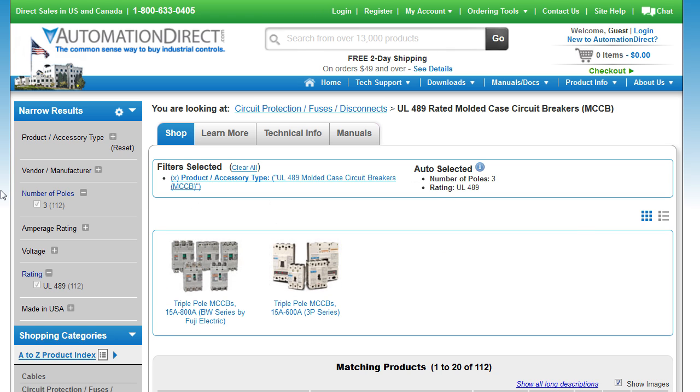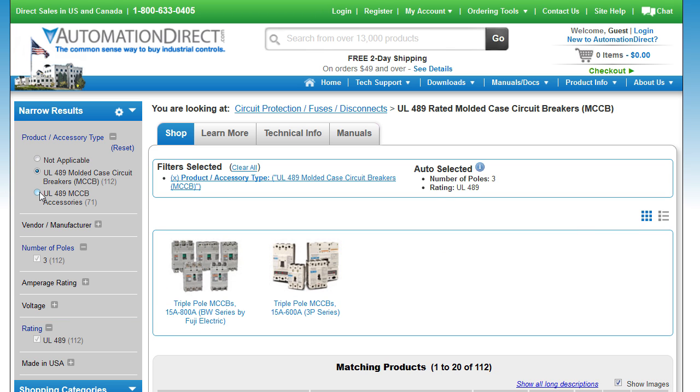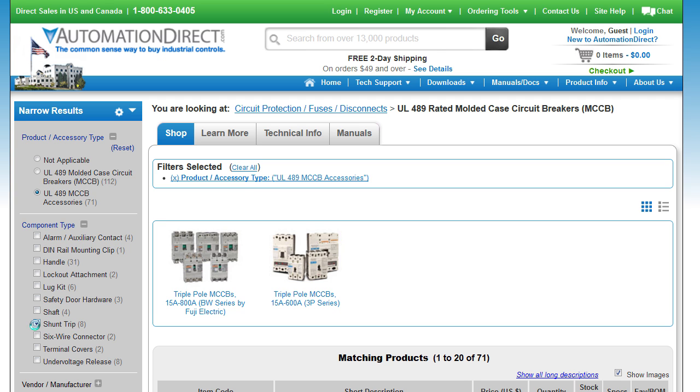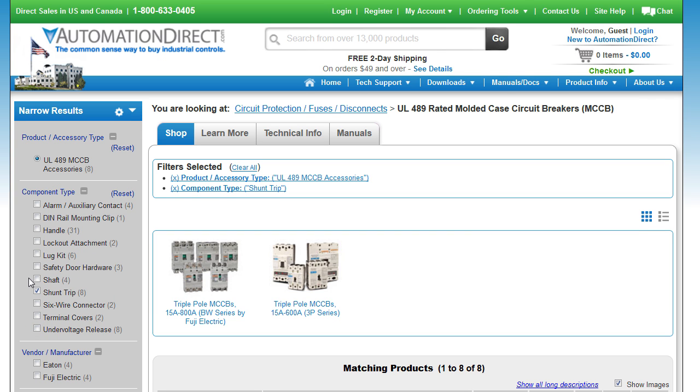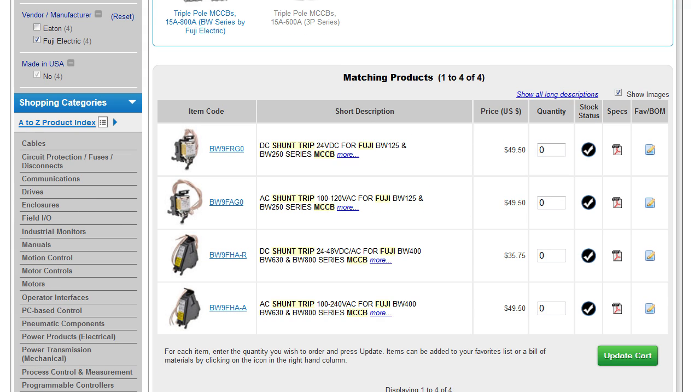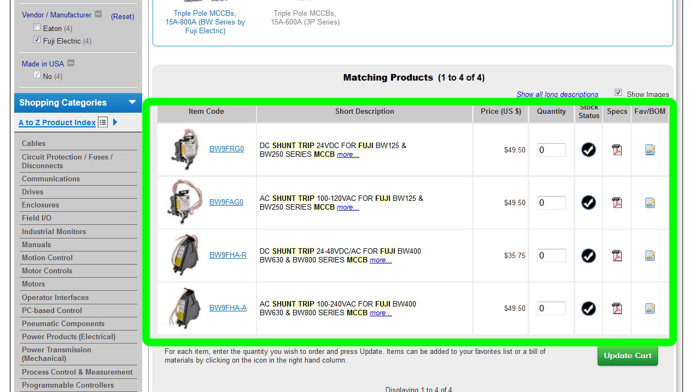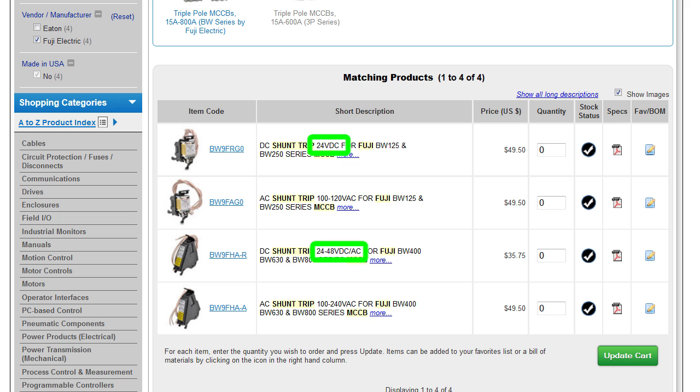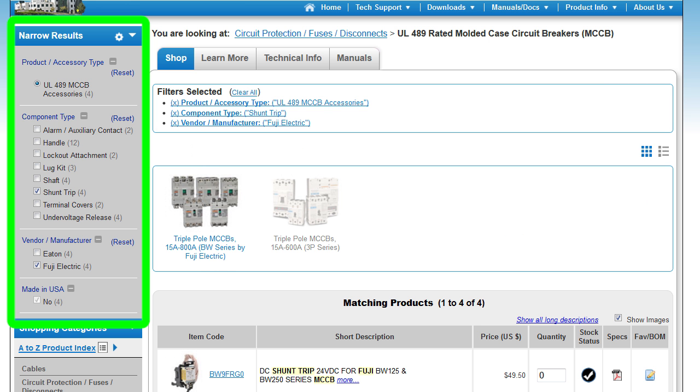And then I can select the component type I want – let's do a shunt trip for example and select the type of breaker I'm using – let's assume we selected a Fuji – and all of a sudden we're down to 4 possible part numbers which we simply match up with the series of breakers that we're using – in this case a 250 or 630 and whether we want 24V or 120V AC control. This parametric search makes selecting circuit breakers and accessories so easy.